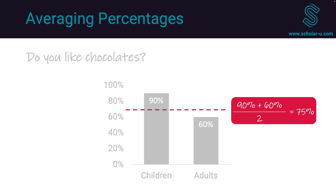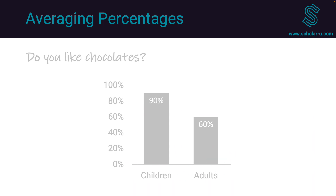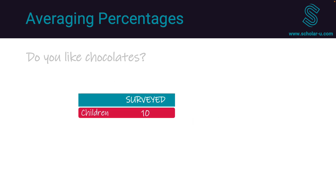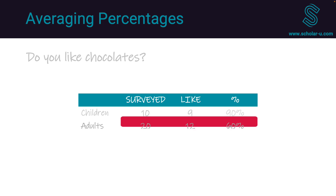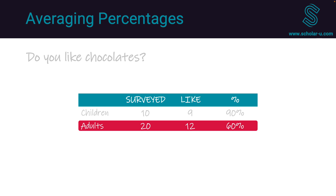Unfortunately, the answer is no — with an exception I'll mention towards the end. Let's dive into the data. In this example, we surveyed 10 children; 9 of them like chocolates, giving us 9 out of 10, or 90%. On the other hand, we surveyed 20 adults; 12 of them like chocolates, so 12 out of 20, or 60% of adults like chocolates.